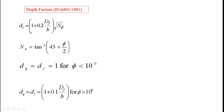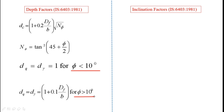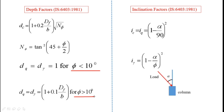For depth factors dc and dq in the IS code method, the first formula applies when phi is less than 10 degrees; if phi is greater than 10 degrees, use the second formula. If phi equals exactly 10 degrees, use either formula. For inclination factors ic and iq, the formula is given on screen, and as discussed, alpha is always the angle between the vertical and the load.